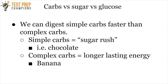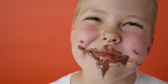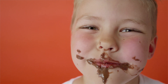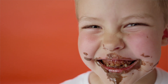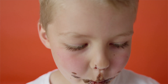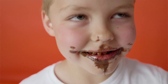We can digest simple carbs faster than complex carbs because simple carbs don't have as many sugar molecules, making them easier for the body to break down. Simple carbs are what you get from a chocolate bar, for example. You've probably experienced eating something with a lot of sugar and getting that temporary burst of energy, then feeling worse 30 to 40 minutes later — that sugar rush followed by the sugar crash.